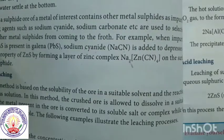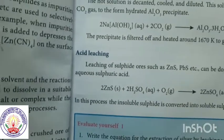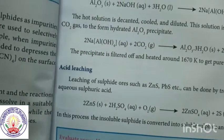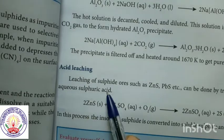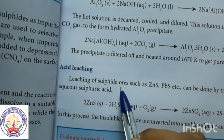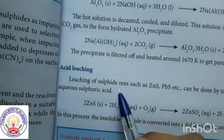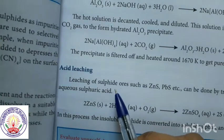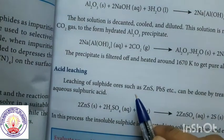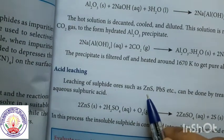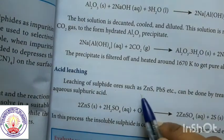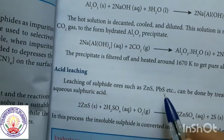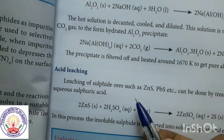Next, we shall see acid leaching. Acid leaching is mainly used for sulphide ores. We have already seen in froth flotation method that it is suitable for sulphide ores — specifically galena and zinc blende — and these can also be treated in acid leaching.